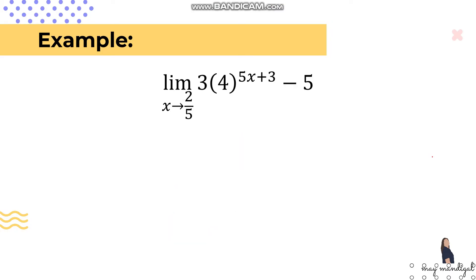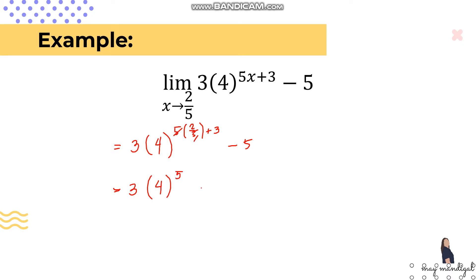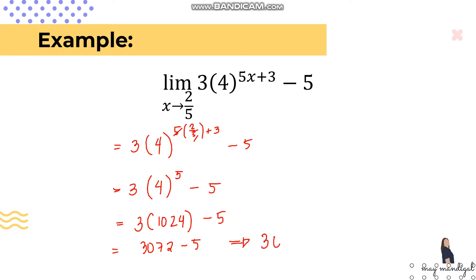Next example: limit of 3 times 4 raised to (5x+3) minus 5 as x approaches 2/5. Substituting: 3 times 4 raised to (5 times 2/5 + 3) minus 5. The 5s cancel, giving 4 raised to (2+3) = 4^5 = 1,024. Then 3 times 1,024 minus 5 = 3,072 minus 5 = 3,067. So the limit of this function is 3,067.